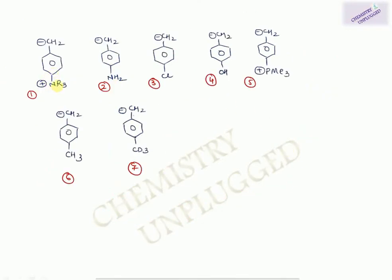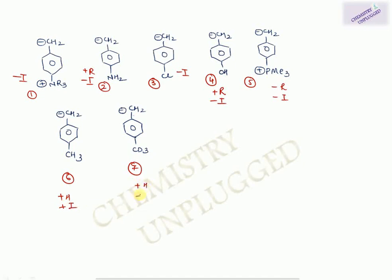Next example — now we're dealing with a carbanion (carbon with negative charge). Structure 1 has nitrogen with positive charge and three groups attached — no lone pair available — so only minus I effect. Structure 2 has oxygen with available lone pair: plus R and minus I effect. Structure 3 has chlorine at para position: minus I effect (we won't use plus R). Structure 4 has –PMe₃⁺: minus R and minus I effect because its empty d-orbital can accept electrons. Structure 5 has CH₃: plus H and plus I. Structure 6 has CD₃: plus H and plus I.